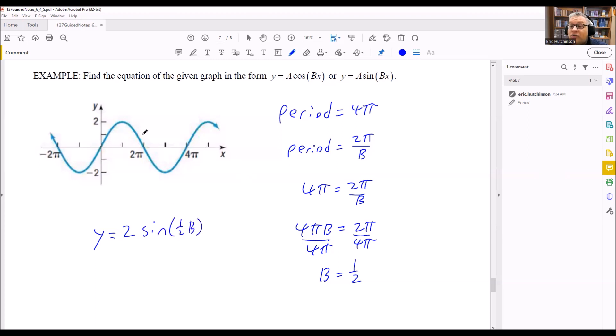And this is the exact equation for this particular graph. Now, if this graph went down, starting by going down and going up like that, then I'd have to make it negative, and it would be negative 2. But in this case, the graph is going up, so it's positive 2. So y equals 2 sine 1/2x, and that's the equation for this graph.